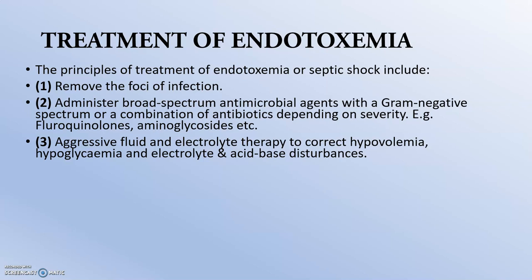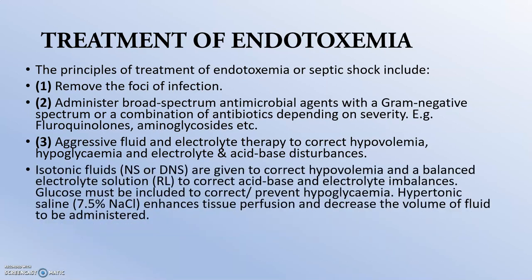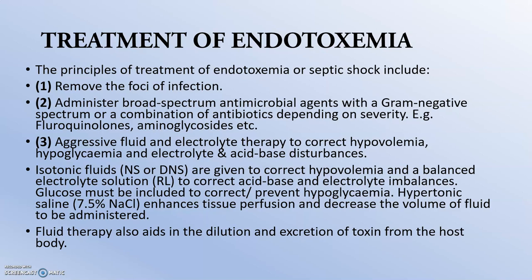Aggressive fluid and electrolyte therapy is used to correct hypovolemia, hypoglycemia, and electrolyte and acid-base imbalances. Isotonic fluids such as normal saline or dextrose normal saline are given to correct hypovolemia, and balanced electrolyte solution such as Ringer's lactate is used to correct acid-base and electrolyte imbalance. To prevent hypoglycemia, glucose solution can be added orally or parenterally. Hypertonic saline (7.5% sodium chloride) enhances tissue perfusion and decreases the volume of fluid to be administered. Fluid therapy also aids in the dilution and excretion of toxins — increased urination improves glomerular filtration and toxin excretion.